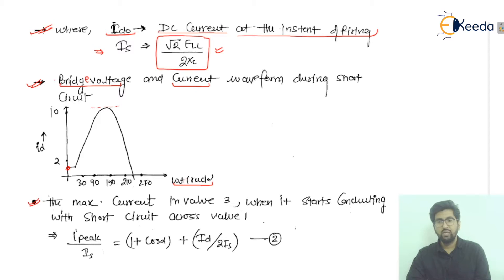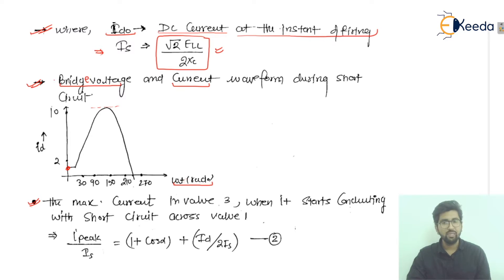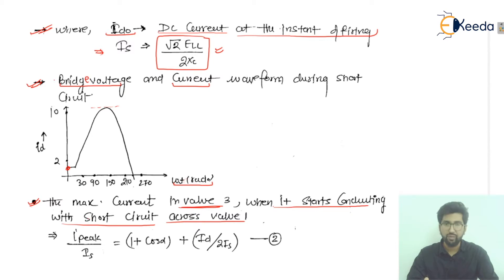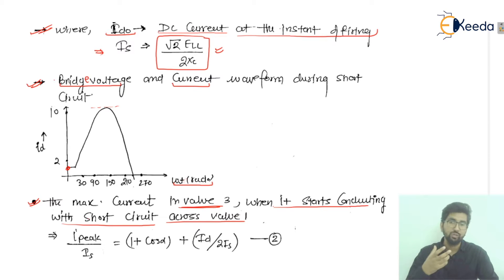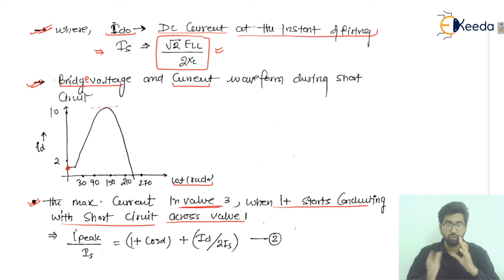The maximum current in valve number three — taken here for analysis — occurs when it starts conducting with a short circuit across valve number one. As seen in commutation failure, there is a transfer of current from valve one to valve three. In the upper commutation group, the sequence is: one, three, five, operating after each 60-degree interval. The commutation goes from valve number one to valve number three.